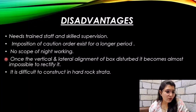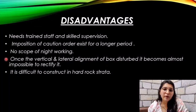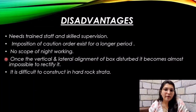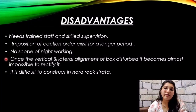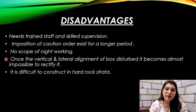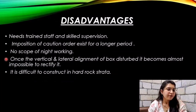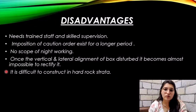Once the vertical and lateral alignment of the box is set, it becomes impossible to rectify. The reason is that if the alignment goes wrong and the box has already penetrated into the ground, we cannot detect and rectify it, so the structure cannot be reused. The last disadvantage is that it is difficult to construct in hard rock strata — when we try to penetrate the box into hard rock, a lot of problems arise.